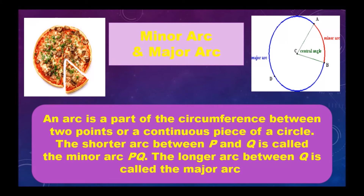Minor arc and major arc: an arc is a part of the circumference between two points, or a continuous piece of a circle. The shorter arc between P and Q is called the minor arc PQ, and the longer arc is called the major arc.